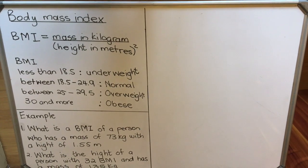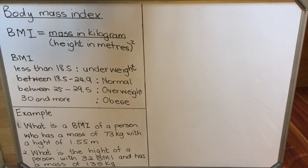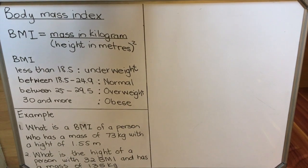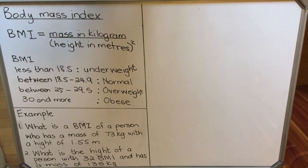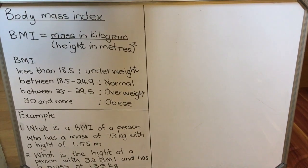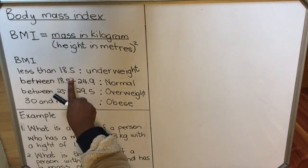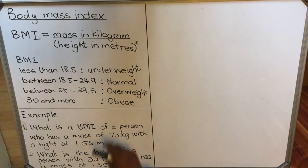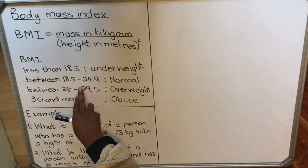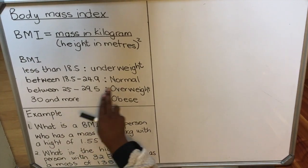Body mass index is used to measure whether somebody is overweight, obese, or at a normal weight. Here's a table: if you calculate the body mass index and get less than 18.5, it means that person is underweight and needs to eat more. If it's between 18.5 and 24.9, they are normal.